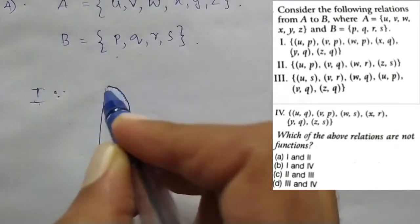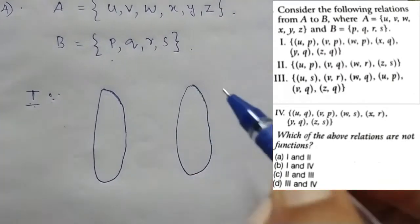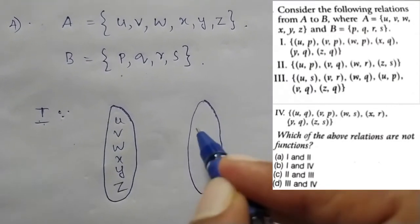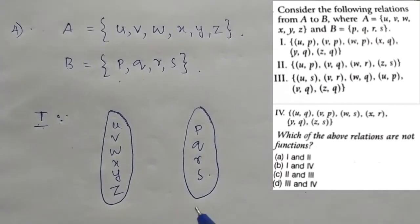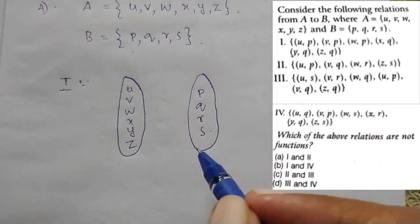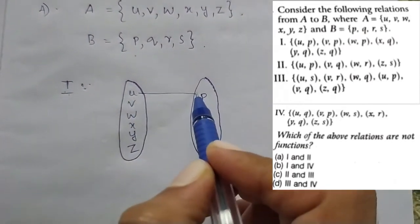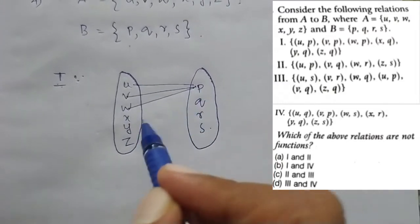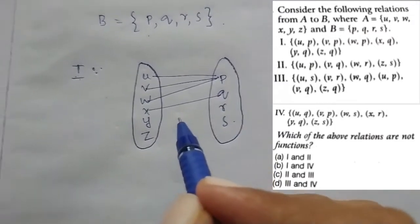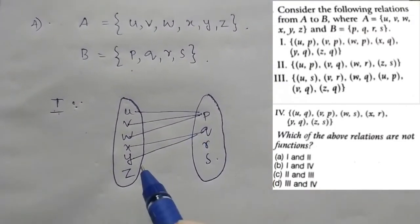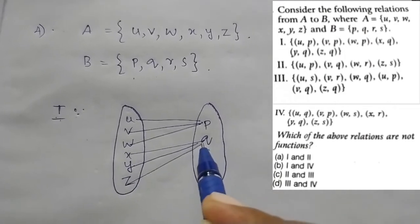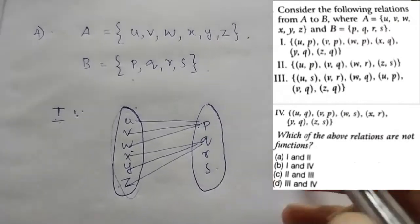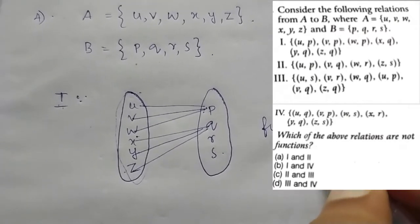We have two sets A and B. Set A has elements u, v, w, x, y, z. Set B has elements p, q, r, s. In the first relation, ordered pairs are: u→p, u→v (u has two images). Then w→p, x→q, y→q, z→q. Because u has more than one image, this is not a function — wait, actually this is a function.